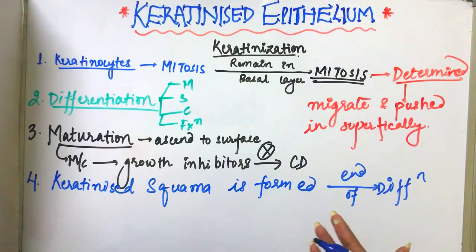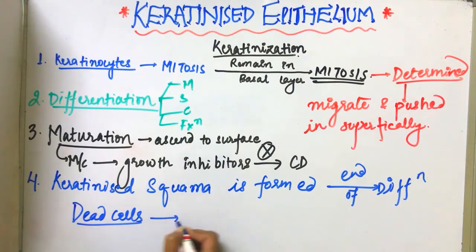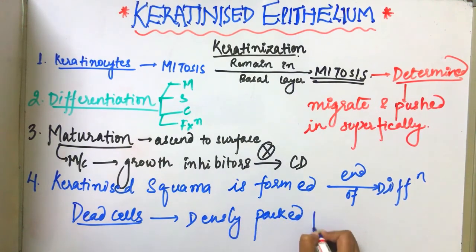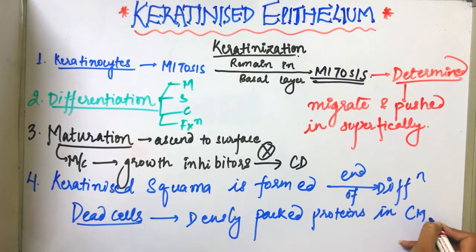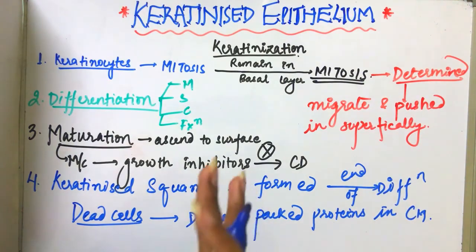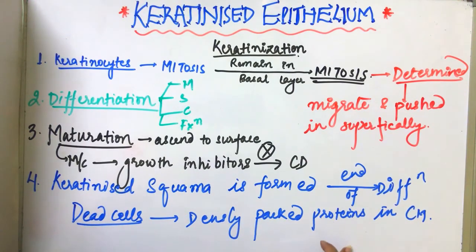The dead cells are filled with densely packed proteins within the toughened cell membrane. The dead cells are packed with dense proteins in the cell membrane.